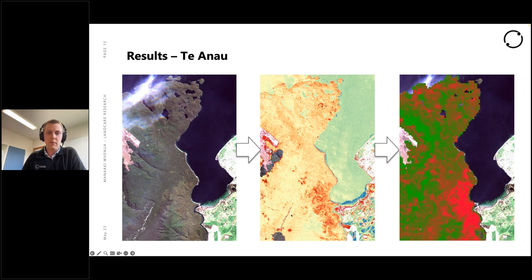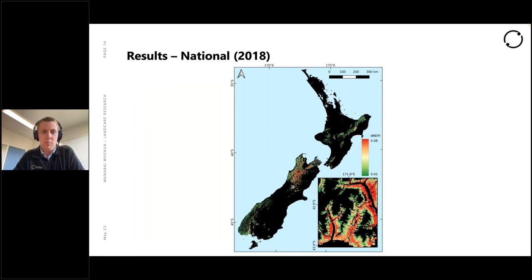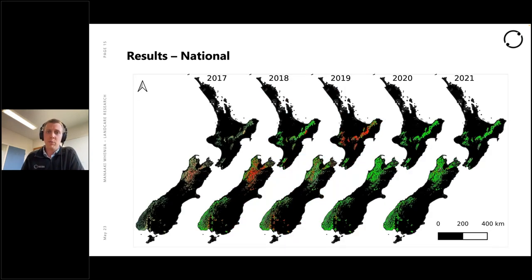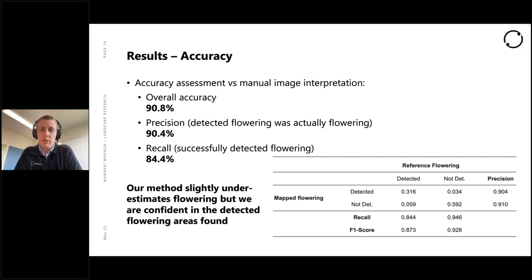On the left is a single date image, the middle is the same date looking at the index, and on the right is a composite looking at all available cloud-free images for the spring. At national scale it looks quite detailed — there's an inset of Hollyford Valley from memory — and it's incredibly detailed at 10-metre resolution over the whole country. We've been running it every year for a number of years, recently ran the 2022 version, and are planning on running it again this spring — hopefully not picking any up, but if we do, DOC might have some work to do in 2024.